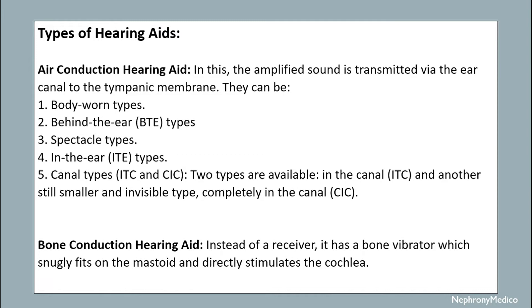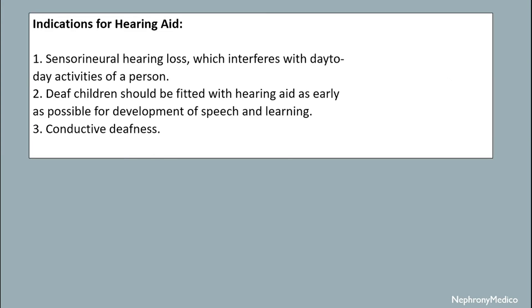Bone conduction hearing aids use a bone vibrator instead of a receiver. This bone vibrator fits onto the mastoid and directly stimulates the cochlea.